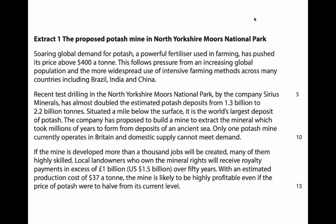Then there's an extract about the proposal to build a huge potash mine in North Yorkshire — actually inside the National Park in North Yorkshire. The idea is they found a huge deposit of potash, and the proposal is a big investment by the company Sirius Minerals to extract potash from underground. There's data about the size of the deposits, about the estimated royalty payments to local landowners over 50 years, and importantly data on the cost per tonne of producing potash — we're told it's about $37 a tonne.